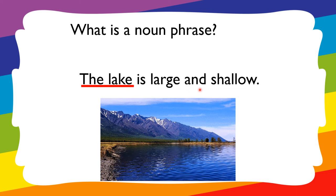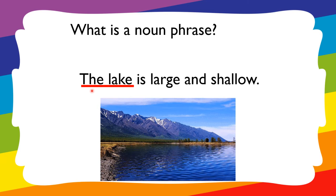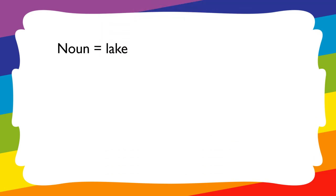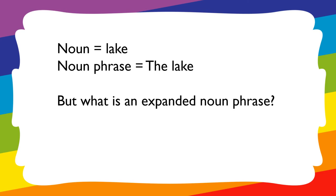In 'The lake is large and shallow,' we have a modifier or article 'the' appearing before the noun 'lake.' So 'lake' is the noun, and 'the lake' is the noun phrase. Now back to the lesson for the day — what is an expanded noun phrase? How do we expand the noun phrase 'the lake'? To expand it, we need adjectives — describing words to expand the noun.